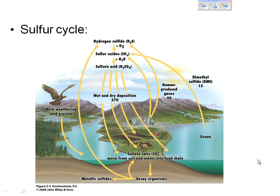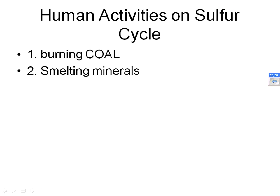Human activities on the sulfur cycle: burning coal and the smelting of minerals — heating ore to remove impurities to extract metals like aluminum or iron — releases sulfur into the atmosphere. Scrubbers can be used to reduce sulfur in the atmosphere, and it is neutralized by limestone.